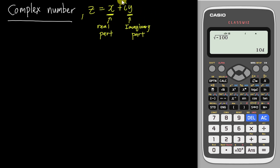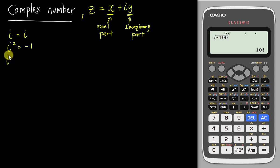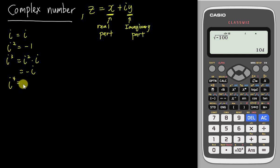Before I explain how we get 10i, you need to understand a few things. i to the power of one is just i. i squared equals negative one. i cubed is i squared multiplied by i, which is negative one times i, giving negative i. And i to the power of four is i squared times i squared, which is negative one times negative one, giving positive one.